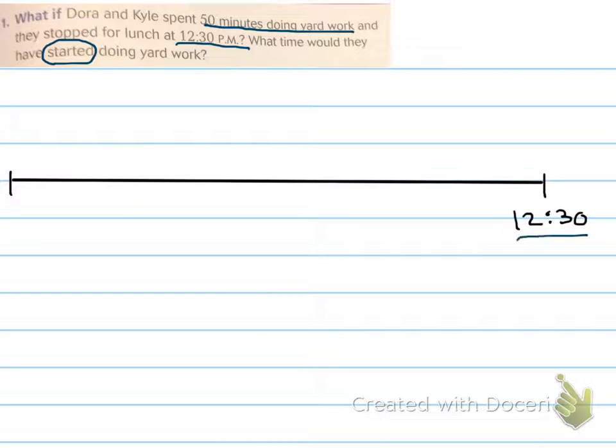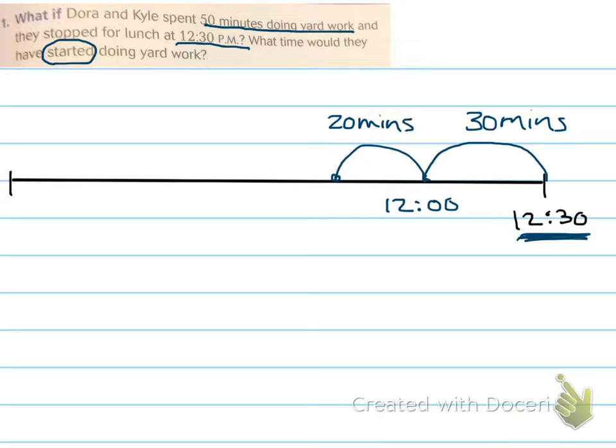So again, I made my timeline. I put that end time they said they ended at 12:30 PM for lunch. Right? They want to know what time they started if they worked for 50 minutes. Again, I like to hop back to an even o'clock. So if it's 12:30 PM, the before even o'clock would be 30 minutes. And that would take us back to 12 o'clock. Now they said 50 minutes, so I need to take another 20 minutes off to make 50 minutes. Whoa. Okay. So 20 minutes before 12, that would be 11:40. Right? Because an hour only has 60 minutes. So that's why you're hopping back.